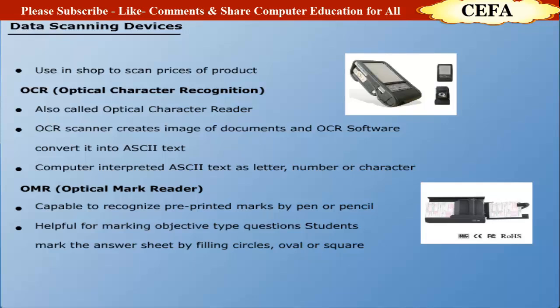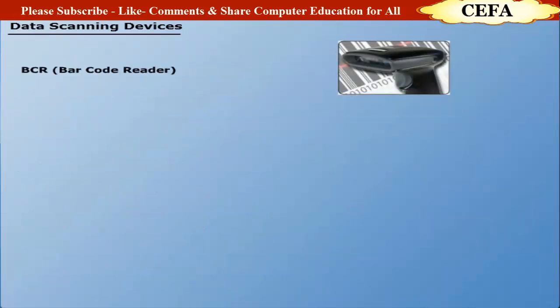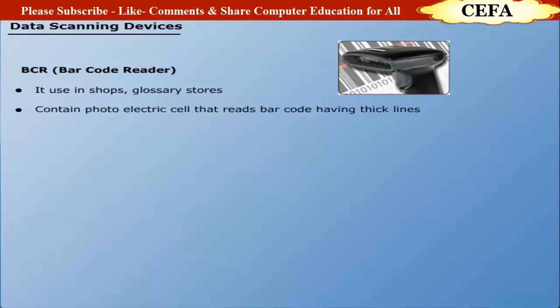The optical mark reader is specifically helpful for objective type questions. The student marks the answer sheet by filling or darkening a circle, oval shape, or square. This printed answer sheet is fed into the computer and grading is done using the optical mark reader. It is normally used in shops and grocery stores. The device contains photoelectric cells that read barcodes consisting of lines with different thickness. A barcode reader helps shopkeepers analyze the price of an item immediately.